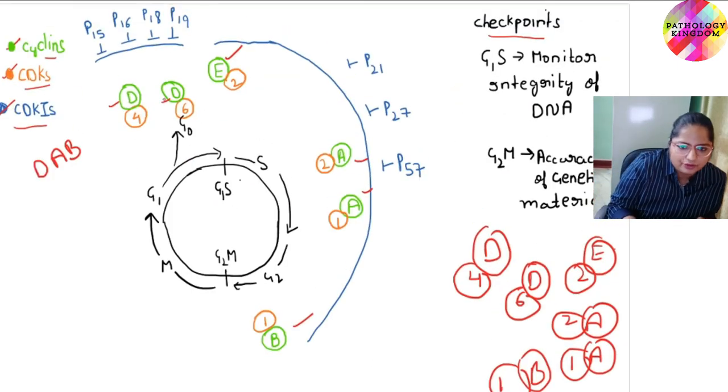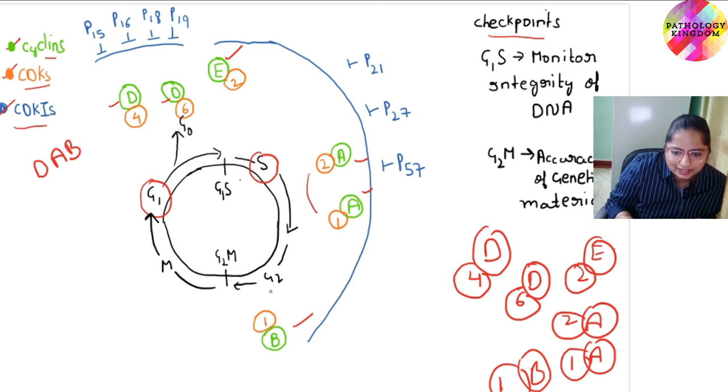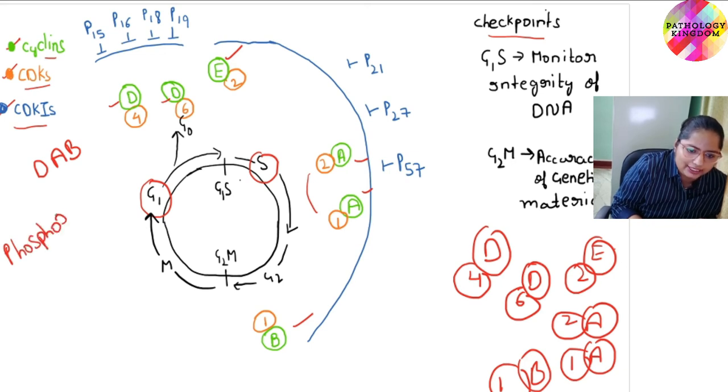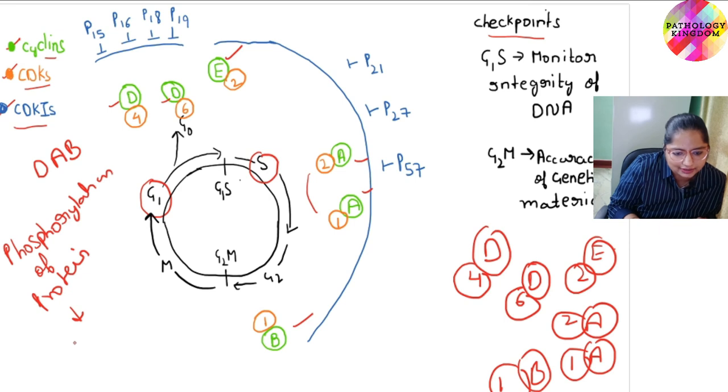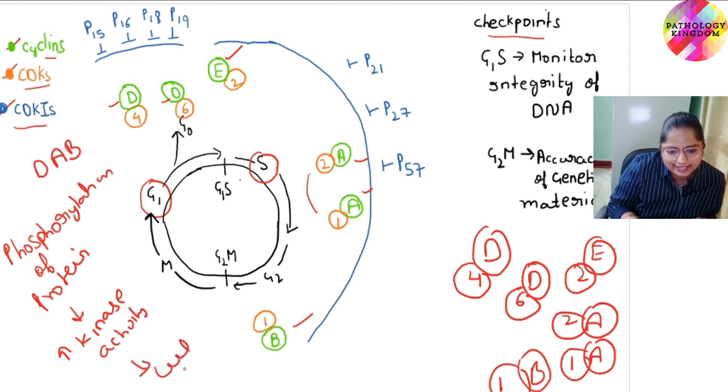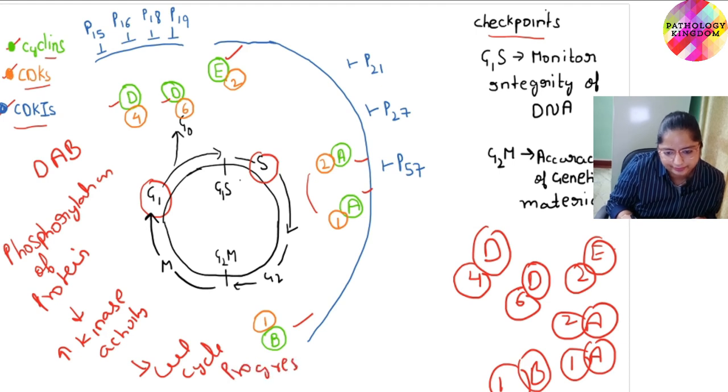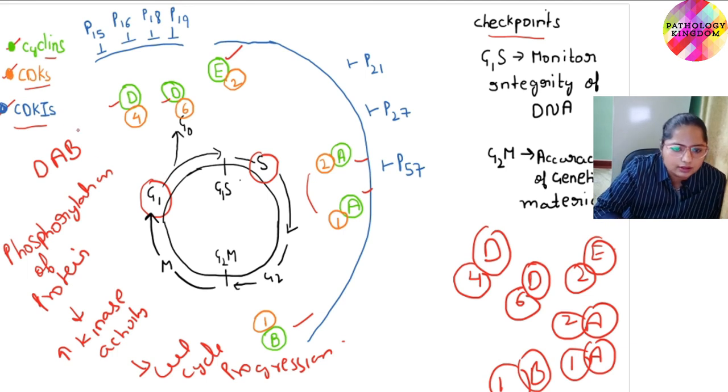So these are the complexes which help in regulation of cell cycle progression. For G1 to S there are three complexes. In S phase there are two complexes. And in G2 to M transition there is one complex. As the complex is formed between cyclin and CDK, it leads to phosphorylation of protein, and this will in return increase the kinase activity and help in cell cycle progression.